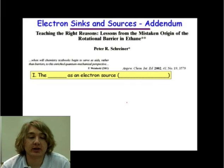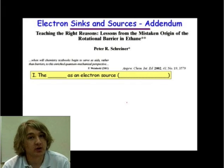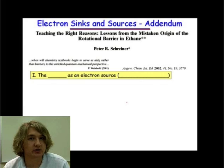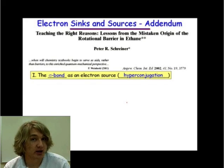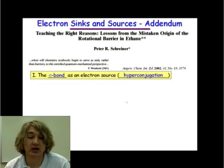In this webcast, we're going to be looking at a different type of electron source, one that you may not be entirely used to seeing, but we'll discuss it here. And that electron source is the sigma bond. And the way a sigma bond can act as an electron source is through hyperconjugation.